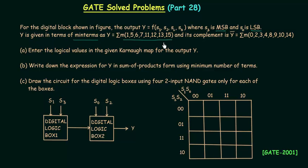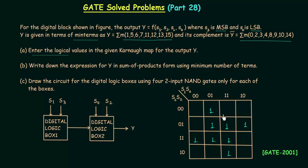You can see the minterms given in the problem, and the complement is also available to us. In the first part, we need to enter the logical values in the given Karnaugh map for the output Y. The minterms are 1, 5, 6, 7, 11, 12, 13, and 15. I will quickly enter the values in the KMAP. This is how your Karnaugh map will look once you fill it with the minterms given in the problem.